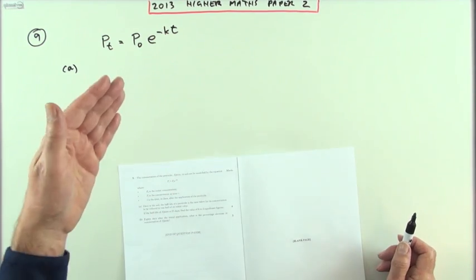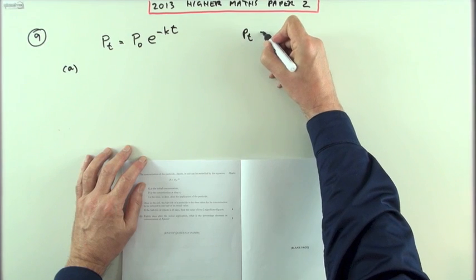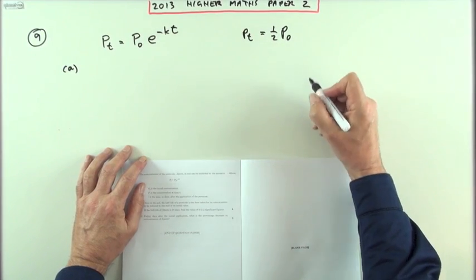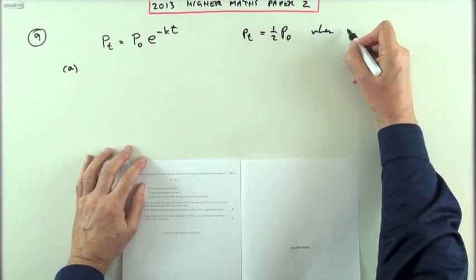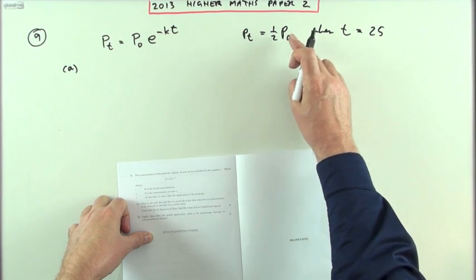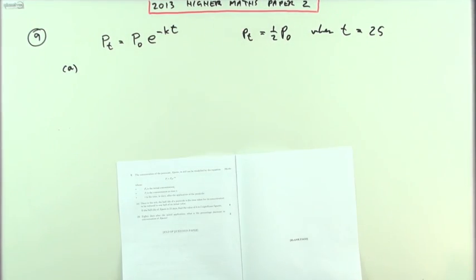And the half-life means half of it will have gone. So you can make this statement. The half-life means that the amount you end up with is half of what you started with. And when does that happen? It happens when t is, it says, 25 days. It takes 25 days for the initial amount to drop to half that amount.